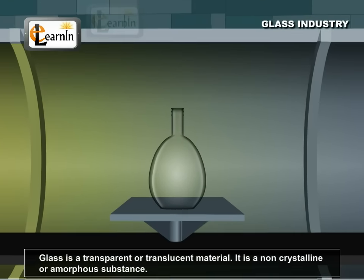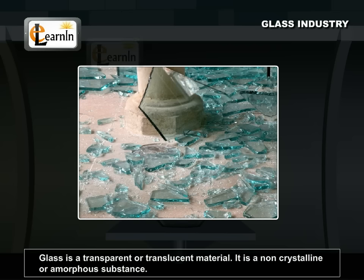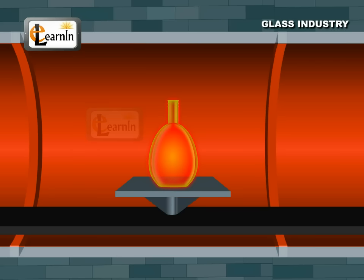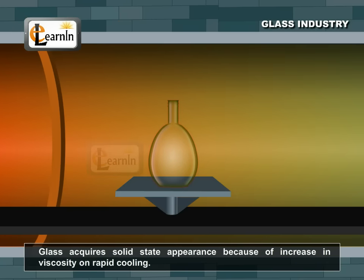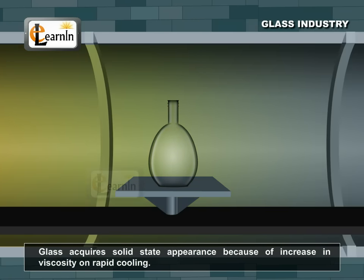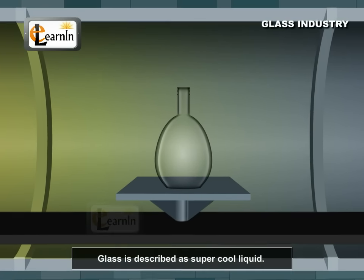Glass industry. Glass is a transparent or translucent material. It is non-crystalline or amorphous substance. Although it appears in a solid state, it is not a true solid. It may be considered as a frozen liquid. It acquires solid state appearance because of increase in viscosity on rapid cooling. So, glass is described as a supercool liquid.